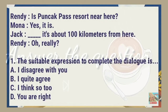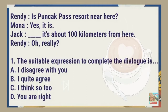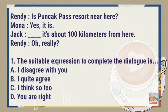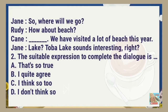Number one. Randy: Is Puncak Pasuri not near here? Mona: Yes, it is. Jack: [blank] — it's about 100 kilometers from here. Randy: Ah, really? The suitable expression to complete the dialogue is: A. I disagree with you, B. I quite agree, C. I think so too, or D. You are right. Please answer in the comments.